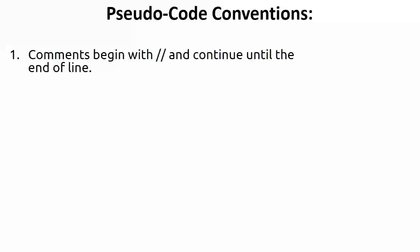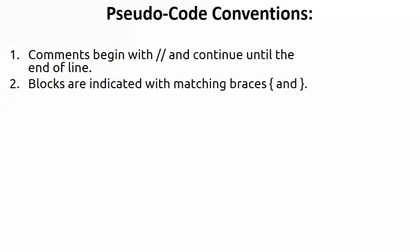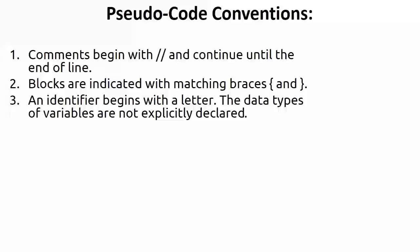Blocks are indicated with matching braces — open brace to start and close brace to end, just like in any programming function. Identifiers must begin with a letter; any variable declaration must start with an alphabet, not a digit or special symbol. For example, 's1' is valid and 'sample' is valid, but '1s' is wrong.